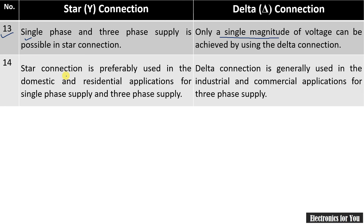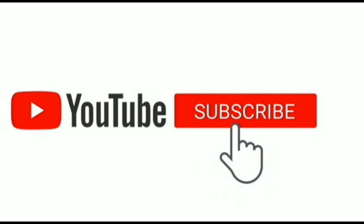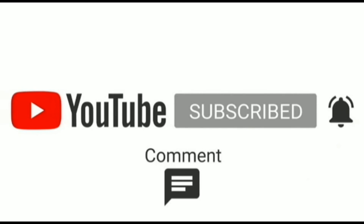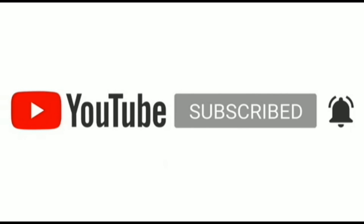Star connection is primarily used in domestic and residential applications, whereas delta connection is generally used in industrial as well as commercial applications. These are the key differences between star connection and delta connection. Previously I have made videos on star connection and delta connection individually — you can see the link in the description. Thank you.